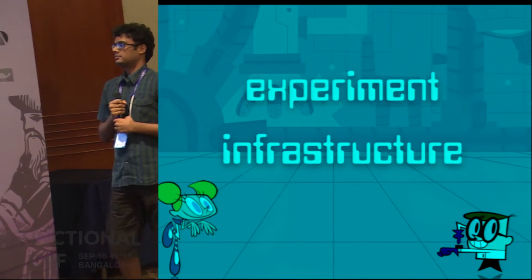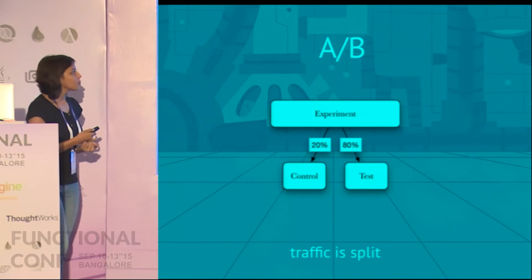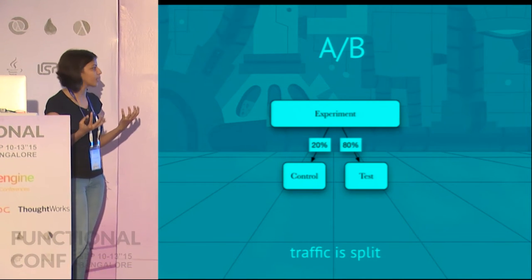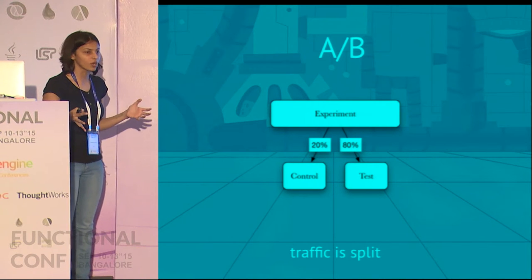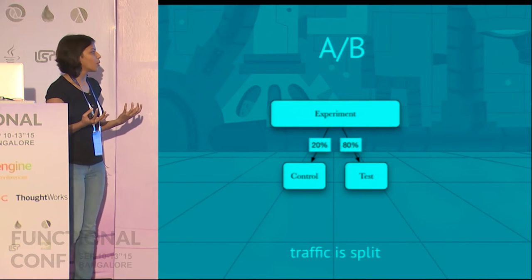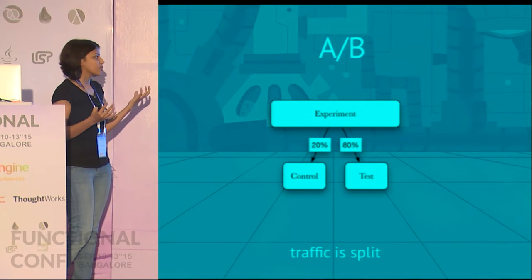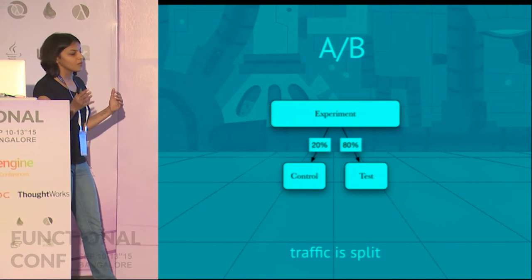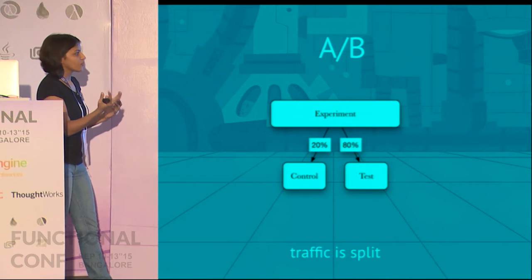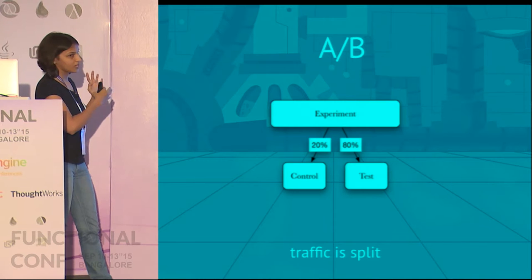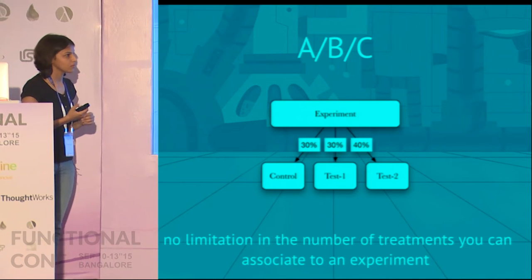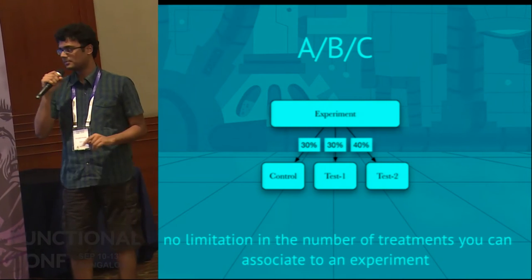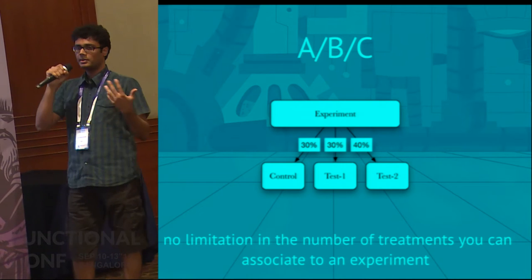Now we'll go through the basic experiment infrastructure. The most basic experiment has one experiment with two treatments: control and test. You divide your traffic into these two buckets. Control is essentially no treatment and test is the hypothesis you're trying to test. You run your experiment for a certain period of time and then compare the measurements of test against control. Traffic is split between control and test only, but you're not restricted to two treatments — you can have as many as you want, and you're free to compare any treatments against each other.